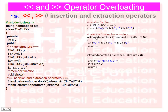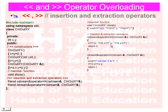Now the body of the extraction operator. The return type is ostream reference — that is, the cout object reference. The function is: ostream reference operator<<, with parameters ostream reference o and CInOutXY reference z, which is the class object reference. Inside, we use o << z.x << z.y, and then return the ostream reference o.